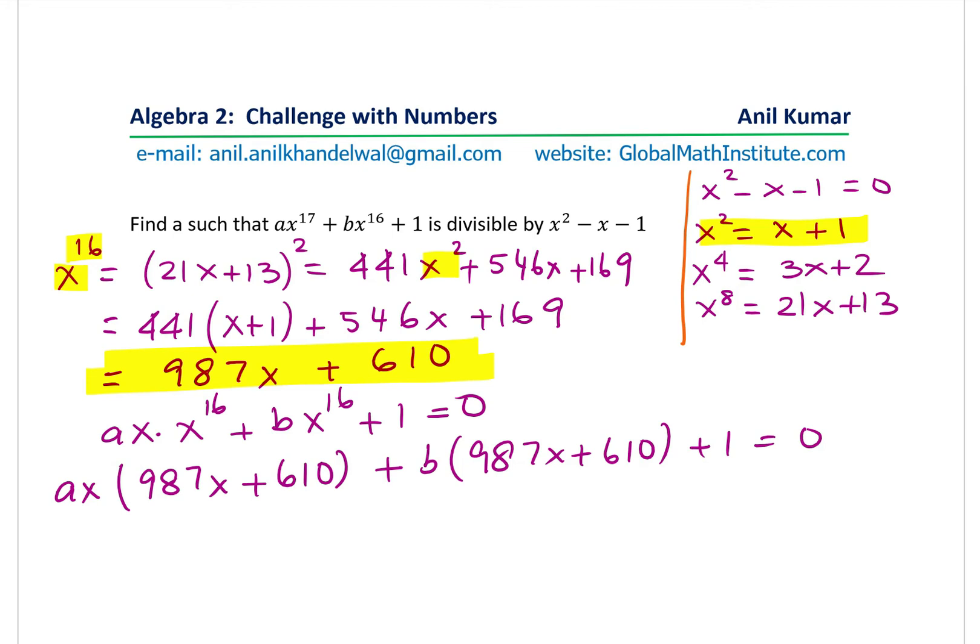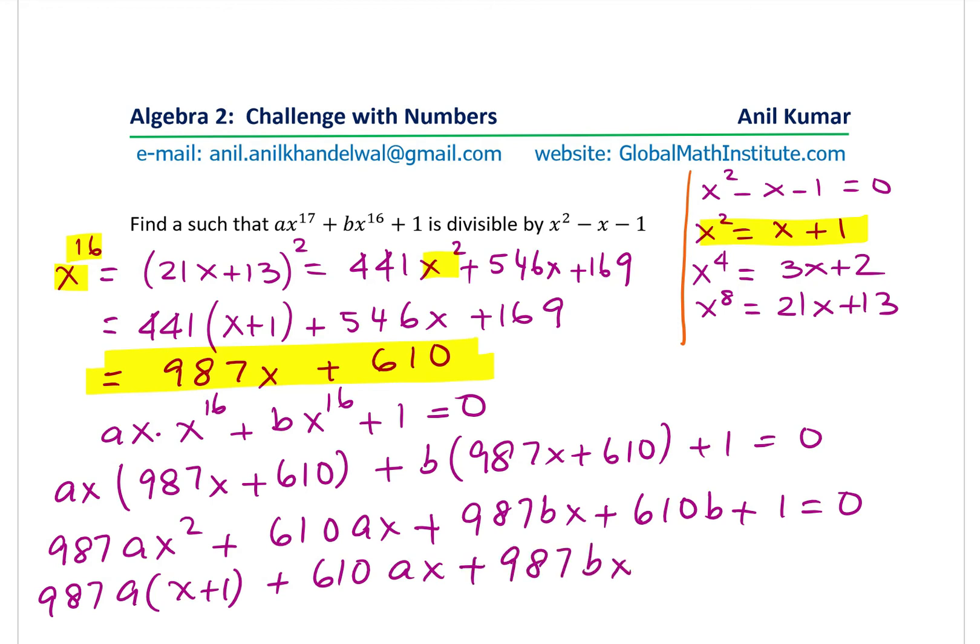Now we can expand this and simplify. So when you expand, you get the x squared terms, which is 987ax squared, plus 610ax plus 987bx plus 610b plus 1 equals to 0. Now we know what x squared is and that can help us to get back all the terms in terms of x, the linear terms. So we'll do 987a instead of x squared. We'll write x plus 1 plus 610ax plus 987bx plus 610b plus 1 equals to 0.